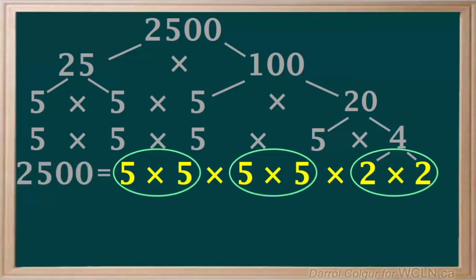Now we'll circle each pair of identical prime factors. And bring one of each number down.